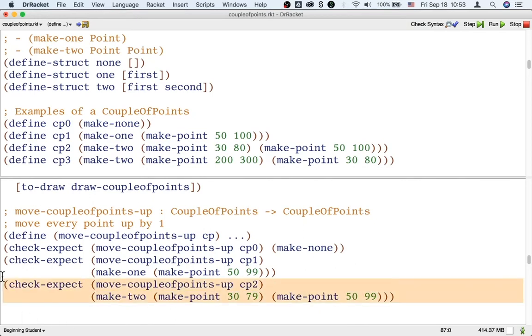So this is a good group of examples because this group of examples includes at least one, in fact only one, for every kind of input. The input is a couple points. There are three kinds of couple points, so we need at least three examples.